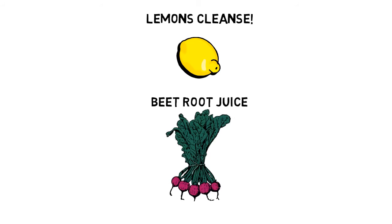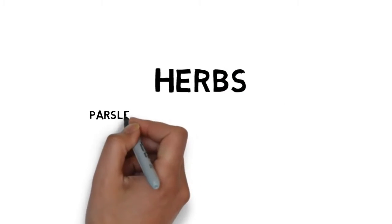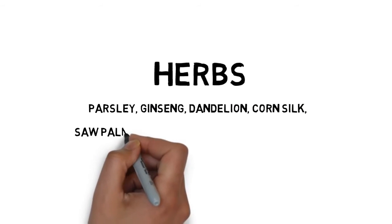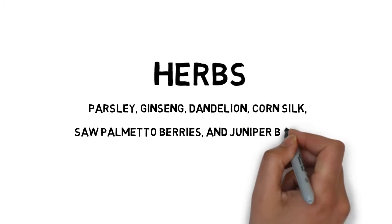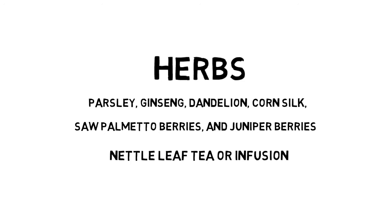If you experience kidney pain, stop immediately. Herbs can also help you get filtration. Parsley, ginseng, dandelion, corn silk, saw palmetto berries, and juniper berries are great for cleaning the kidneys. Nettle leaf tea makes a great daily tonic.